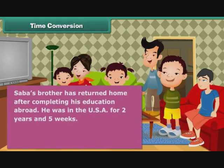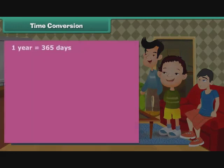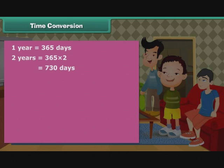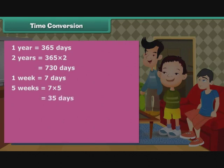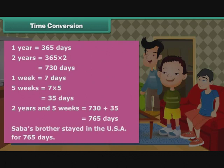Sabah's brother has returned home after completing his education abroad. He was in the USA for 2 years and 5 weeks. Express his stay in days. 1 year = 365 days; 2 years = 365 × 2 = 730 days. 1 week = 7 days; 5 weeks = 7 × 5 = 35 days. 2 years and 5 weeks = 730 + 35 = 765 days. Sabah's brother stayed in the USA for 765 days.